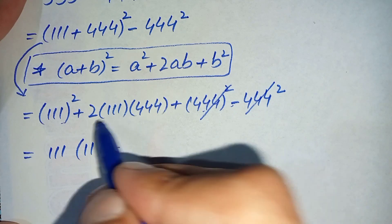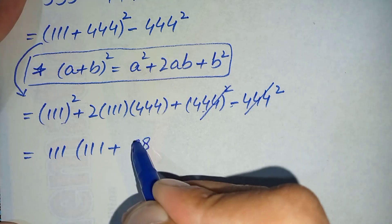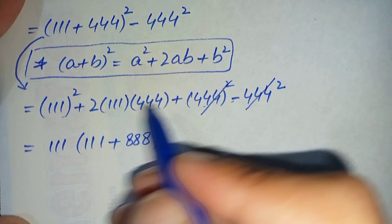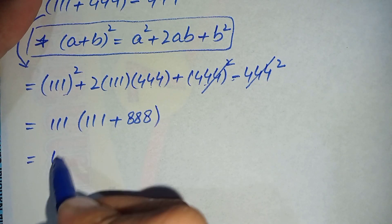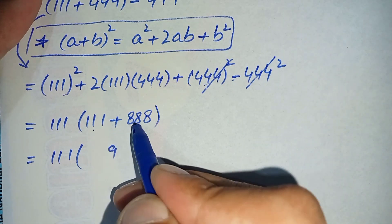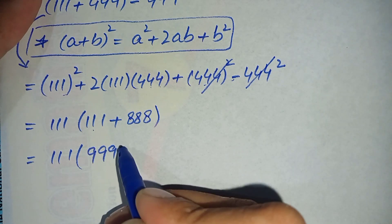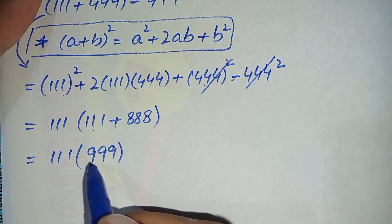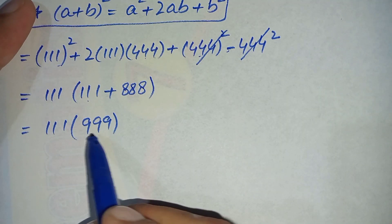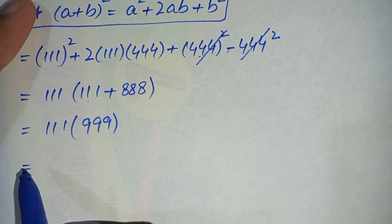Taking 111 common, we are left with 111 times (111 + 2 times 444). Multiplying 2 by 444: 2 times 4 is 8, 2 times 4 is 8, and 2 times 4 is 8, giving 888. Then 1 plus 8 is 9, 1 plus 8 is 9, and 1 plus 8 is 9, giving 999. So again we get 111 times 999.